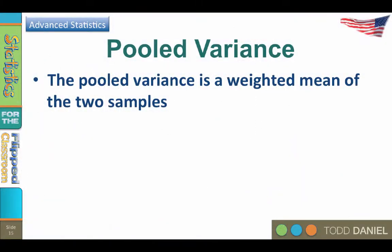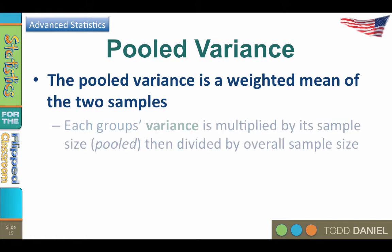When we do an independent samples t-test, we need to calculate the pooled variance. The pooled variance is really the weighted mean of the variance of the two samples. To calculate pooled variance, you multiply each group's variance by its sample size, pool them, and then divide by the overall sample size.